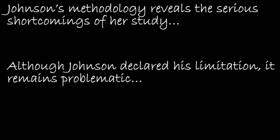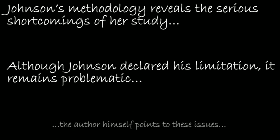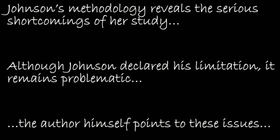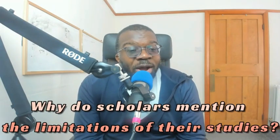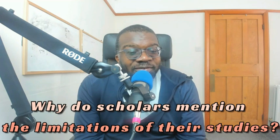Here are some other examples: 'Johnson's methodology reveals the serious shortcomings of her study. Although Johnson declares this limitation, it remains problematic.' 'The author himself points to these issues.' We need to ask: why do scholars mention the limitations of their studies? There are four general reasons.